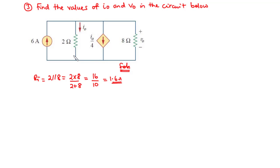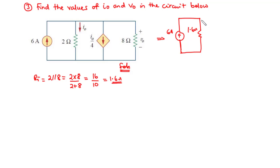So that is the combined resistor of 2 and 8. Let's re-draw the circuit. The circuit is reduced to this form, where we have the combined resistor of 1.6 ohms and then the current source of I0 over 4 amperes. Let's assume the current flowing through the combined 1.6 ohm resistor to be I.